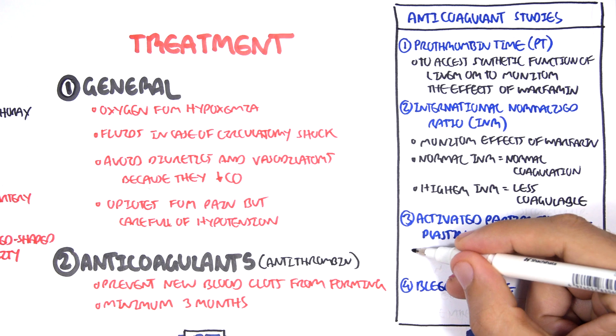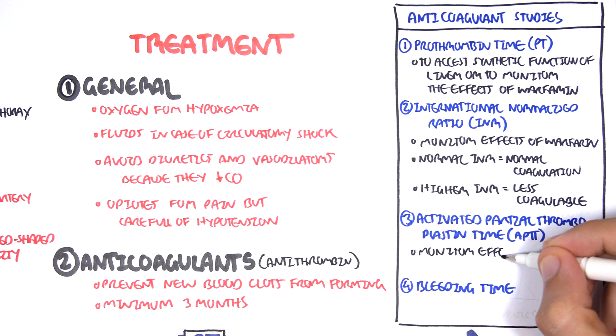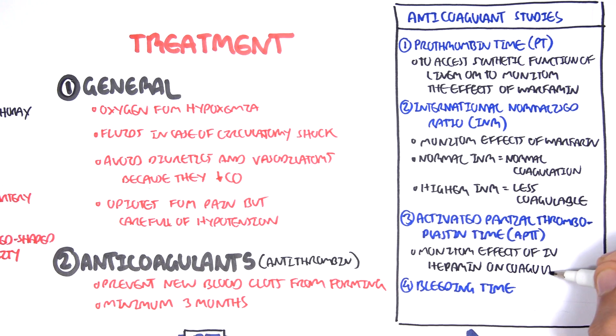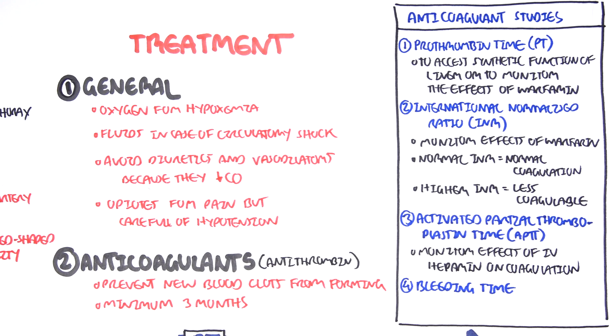The third anticoagulant study is the activated partial thromboplastin time. And this is to essentially monitor the effects of IV heparin on coagulation. Number 4 is your bleeding time, which is the time it takes to stop bleeding, which I think below 10 minutes is normal, or 9 minutes.